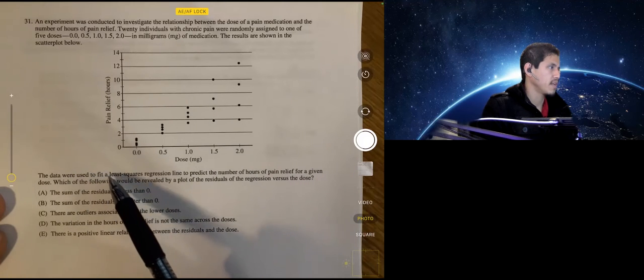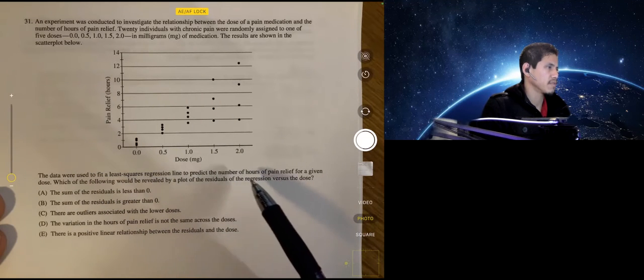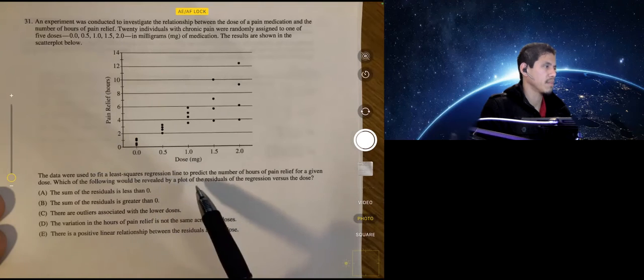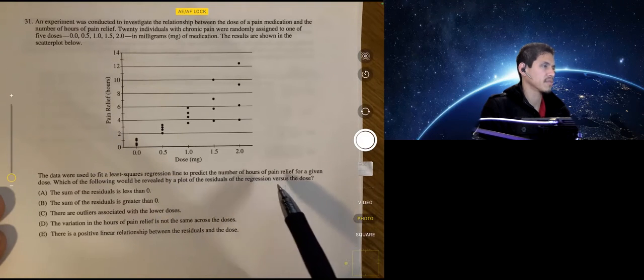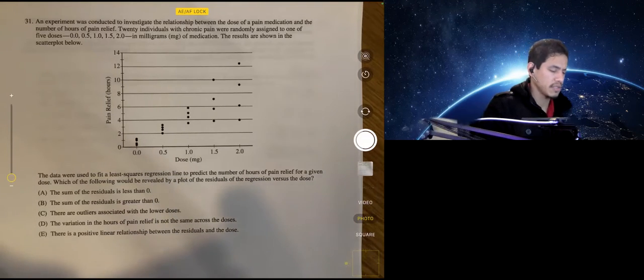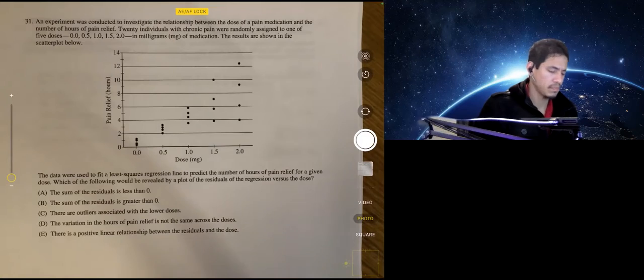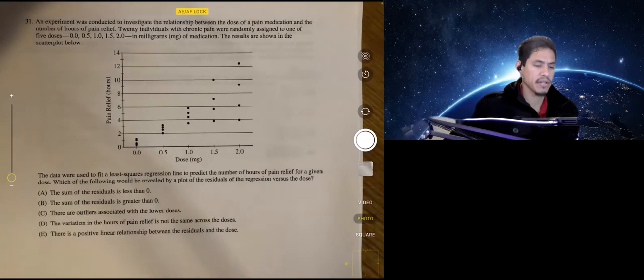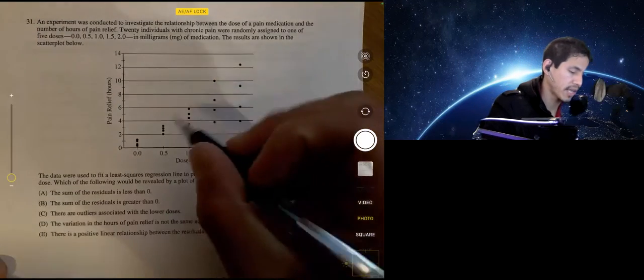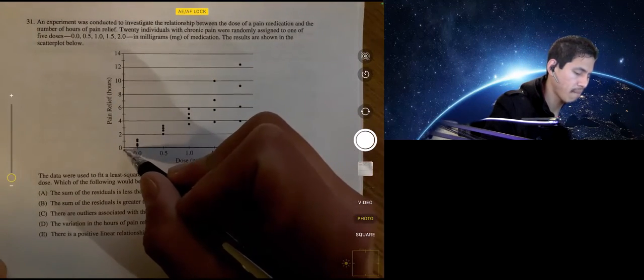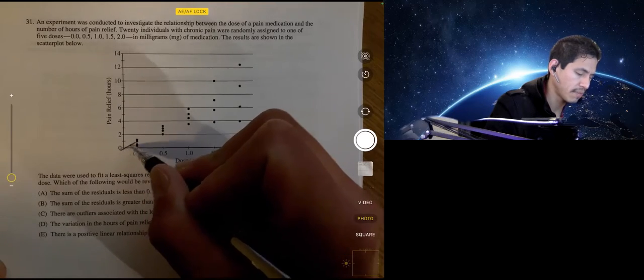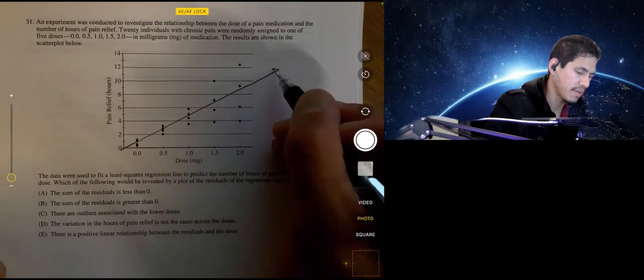All right, so data were used to fit at least for the regression line and predict the number of hours of pain relief for a given dose. Which of these would be revealed by the plot of the residuals of the regression versus the dose? Okay, so let's start off, let's just kind of draw an idea of what the regression line would look like. It's a line that will best approximate all the data, so maybe something like this.